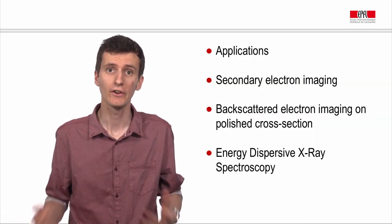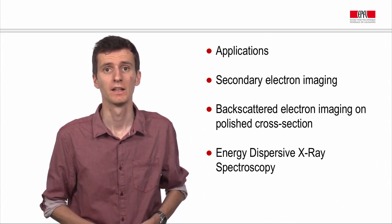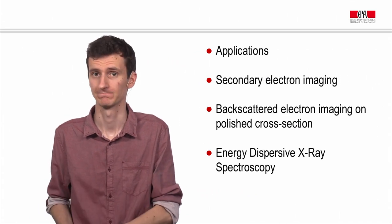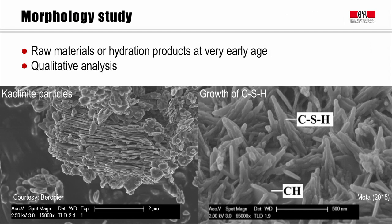These three types of interactions are very useful to characterize the microstructure of cementitious materials. In the next session, you will see how to set up an image and some applications. The first application for secondary electrons is the study of the morphology of particles. Two images show the morphology of kaolinite particles, an anhydrous material, and the growth of C-S-H, a hydration product at very early age. These secondary electrons are used for their topographic contrast, which permits seeing the morphology of particles clearly. This analysis is only qualitative, but it permits a look at the different morphologies found in cementitious materials.